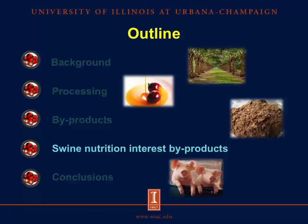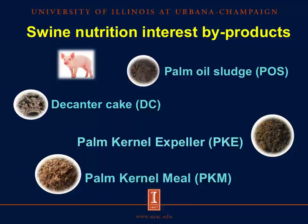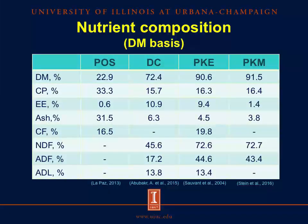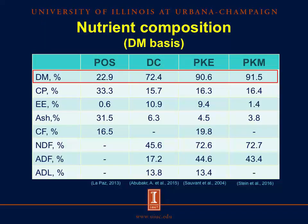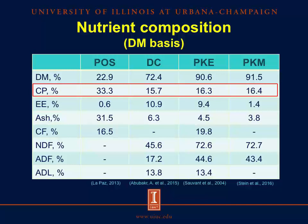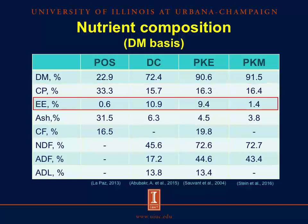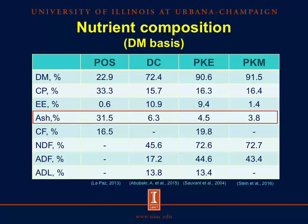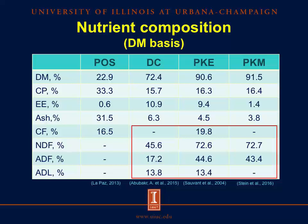Now let's talk about the swine nutrition interest byproducts. It is possible to use four byproducts from the palm oil process: palm oil sludge and decanter cake from the fruit processing, and palm kernel expeller and palm kernel meal from the kernel process. Looking at the nutrient composition on a dry matter basis, palm oil sludge has a low concentration of dry matter compared with the other three byproducts. The concentration of crude protein in palm oil sludge appears higher, but this is due to its low dry matter concentration. However, there are limited data about palm oil sludge composition.